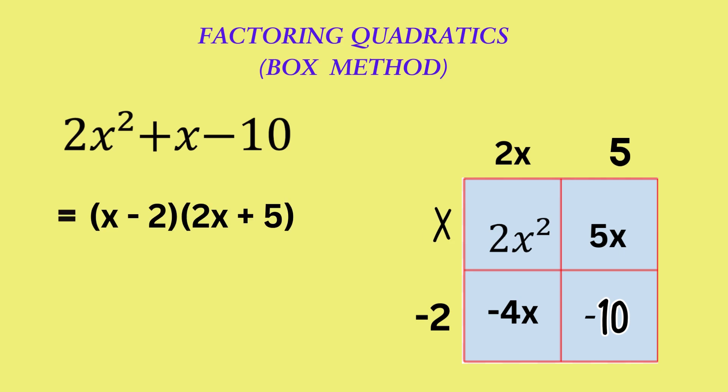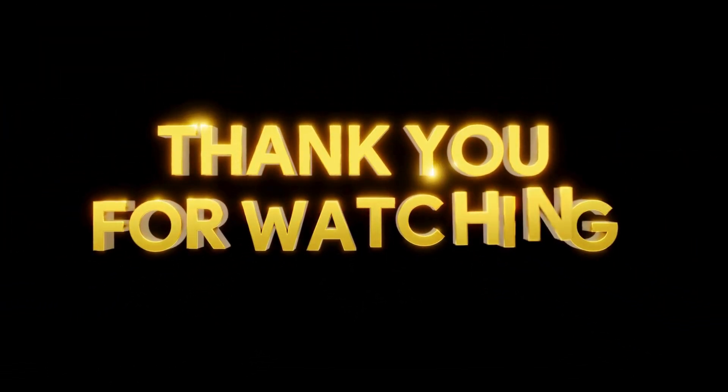Therefore, the expression fully factorized is (x − 2)(2x + 5). The order of the brackets does not matter since multiplication is commutative.